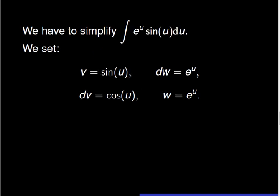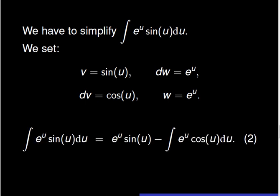We see that we still have to simplify the integral of exponential of u times sine of u du, so we use integration by parts again. Once more, we set v equal to sine of u and dw equal to exponential of u. Thus dv equals cosine of u and w equals exponential of u. The integral of exponential of u times sine of u du is then equal to exponential of u times sine of u minus the integral of exponential of u times cosine of u du.